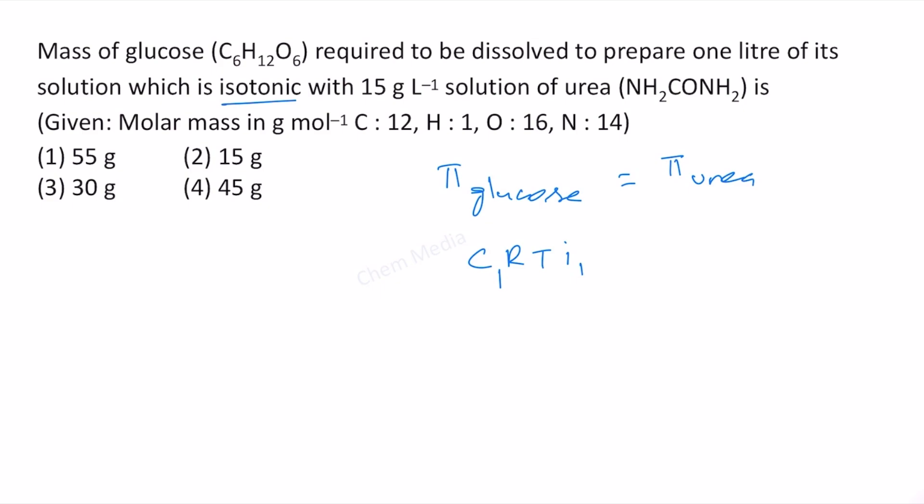And the Van't Hoff factor is i₁. On the other side, C₂ is the concentration of urea times RT times i₂.